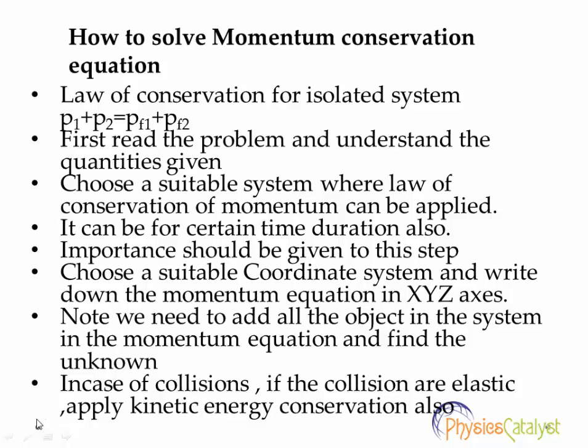The law of conservation of momentum for an isolated system is defined as: initial momentum equals final momentum. So P1 plus P2 is the initial momentum, and Pf1 plus Pf2 are the final momentum. Both initial and final momentum remain constant and equal.